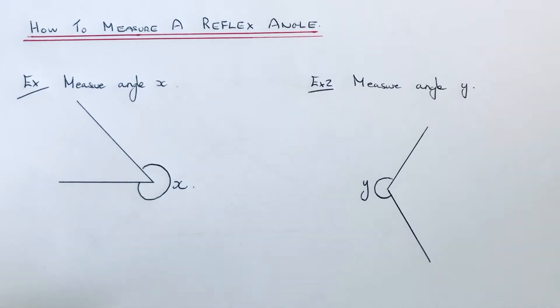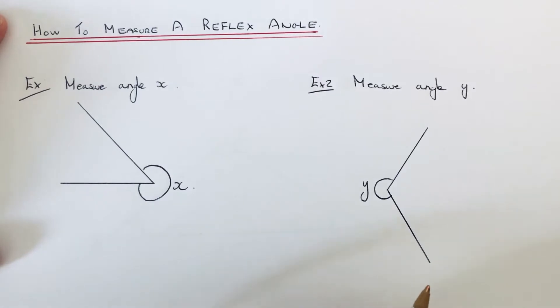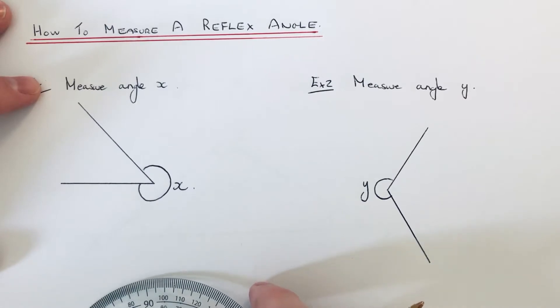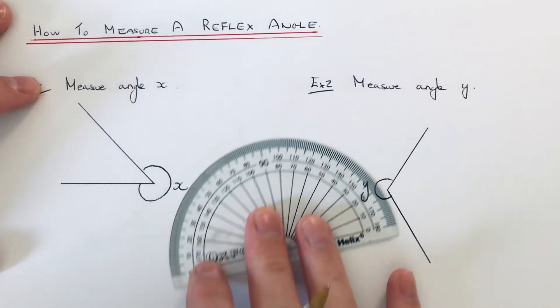Hi guys, welcome back. This is Maths 3000. Just a short video today to show you how to measure a reflex angle. So a reflex angle is an angle larger than 180 and smaller than 360, so you won't be able